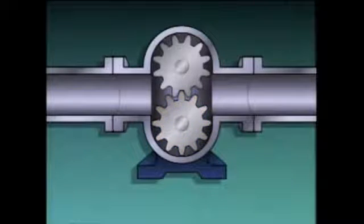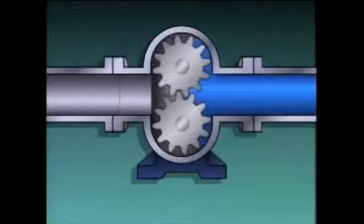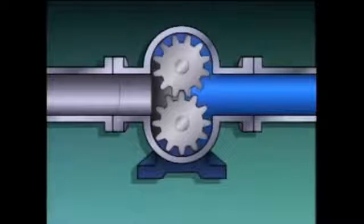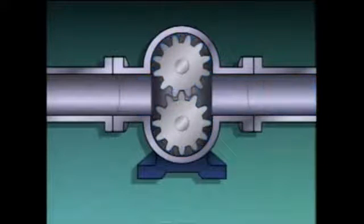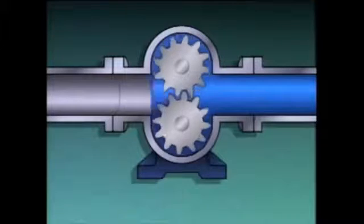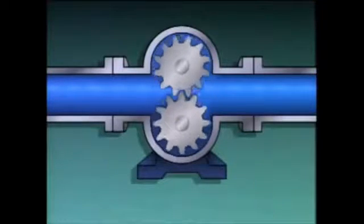During operation, liquid enters the pump through the suction port. As the gears turn, the liquid is trapped in the spaces between the casing and the gear teeth and moved along the casing. When it reaches the discharge port, it's forced out of the pump. Each space between the gear teeth positively displaces a given amount of liquid, so on each revolution that the gears make, a specific amount of liquid is pumped.